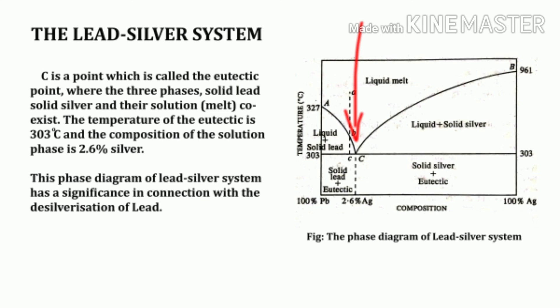Point C is called the eutectic point, where three phases — solid lead, solid silver, and their solution or melt — coexist. The temperature of the eutectic is 303°C, and the composition of the solution phase is 2.6% silver, as shown in the figure. 'Eutectic' means 'easy melting'; it is the point of lowest temperature at which liquid can exist in equilibrium with two solids.